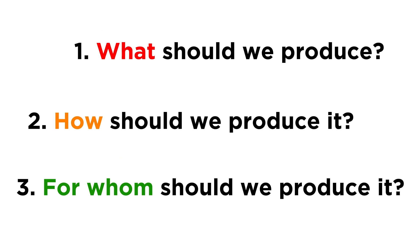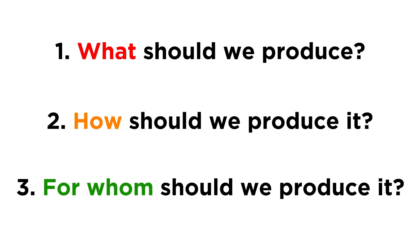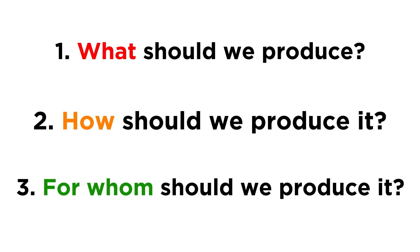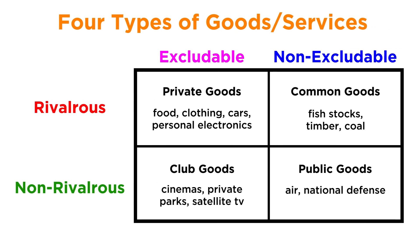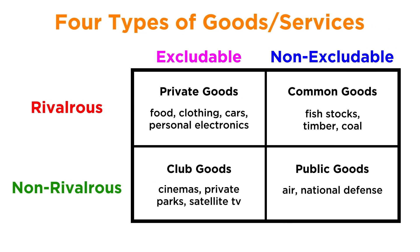The answers a society lands on for these questions — regarding what should get produced, how it should get produced, and for whom it should be produced — tell us a great deal about that society's values. In order to figure out what these values are and help societies determine the best economic system for them, it helps to know the four different types of goods and services.